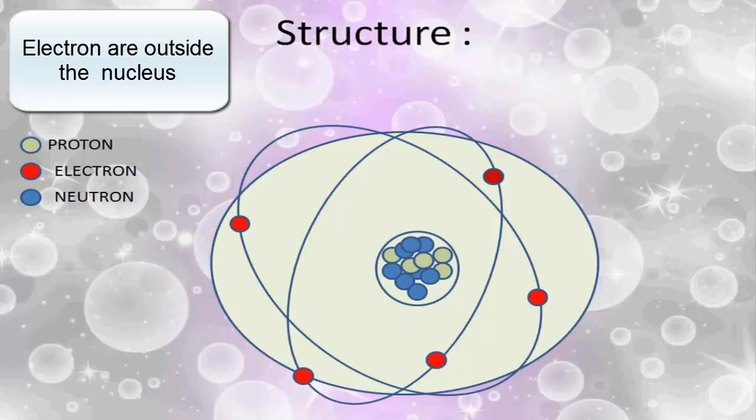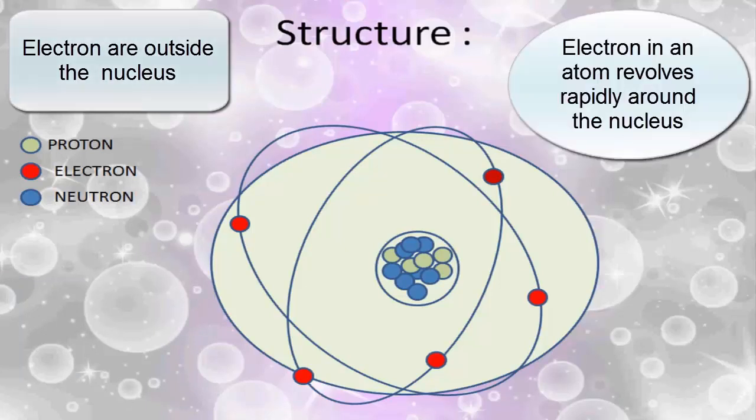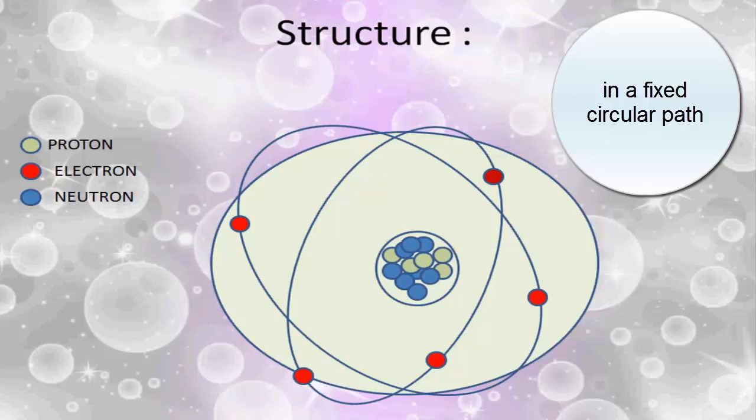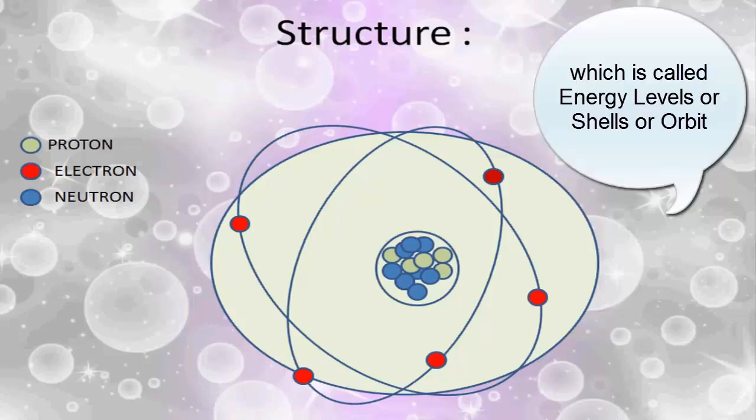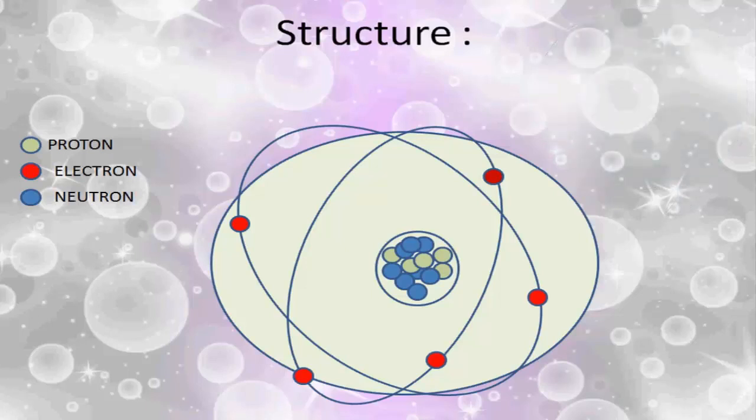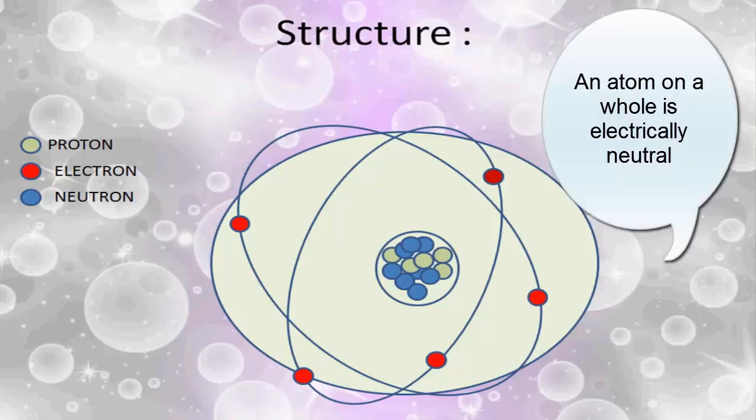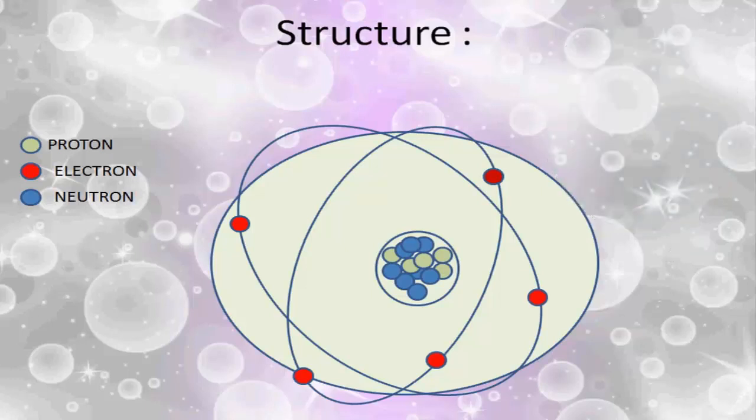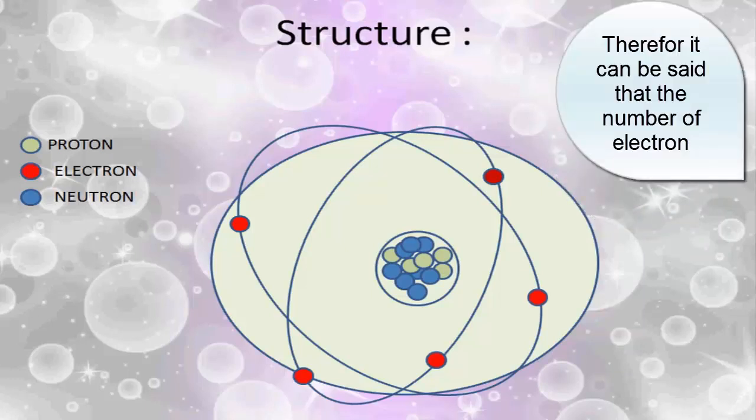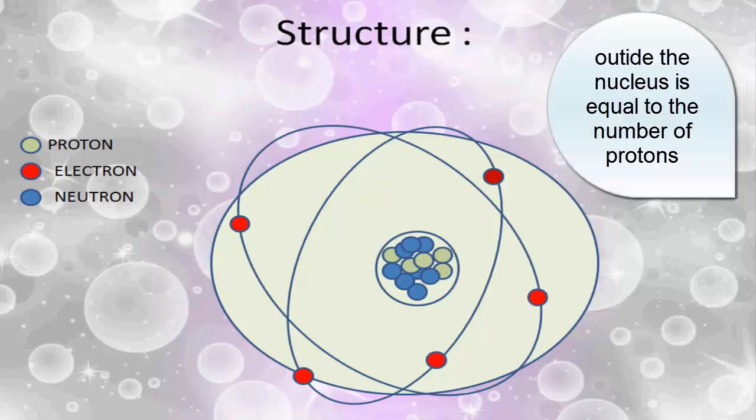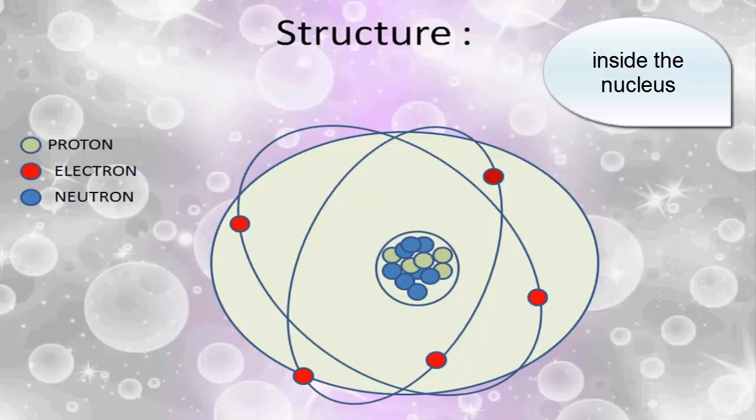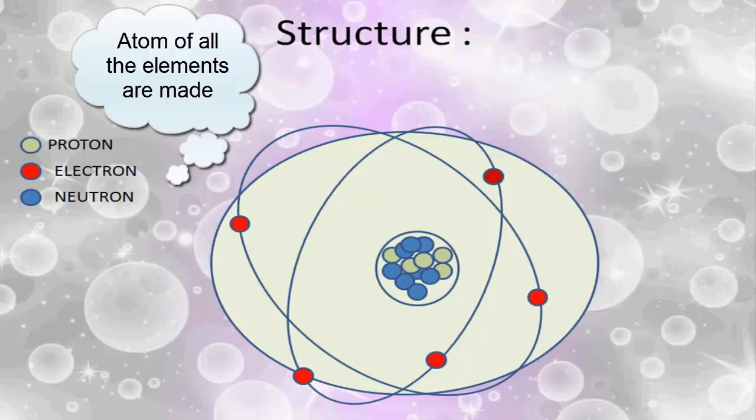Electrons are outside the nucleus and the electrons in an atom revolve rapidly around the nucleus in a fixed circular path we call energy levels or shells or orbits. As an atom on a whole is electrically neutral, therefore we can say that the number of electrons outside the nucleus is equal to the number of protons inside the nucleus.